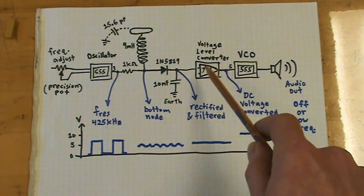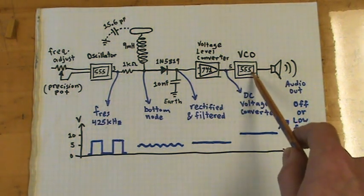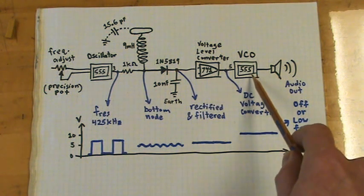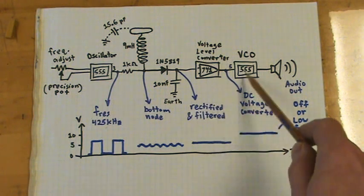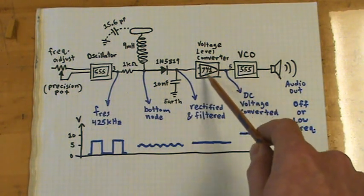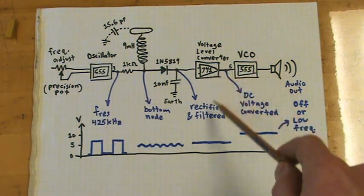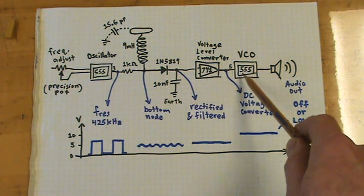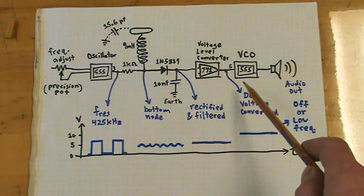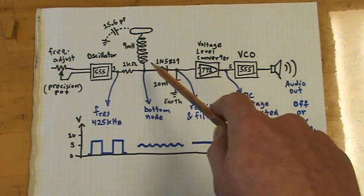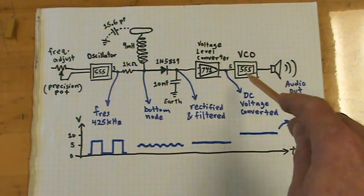Then I've got my voltage controlled oscillator, just another 555 circuit that I would like to feed this into, but I need to do some voltage conversion with the 741 circuit to convert this into something that this one could better understand. If I didn't do that, then as my hand gets closer to the coil, the frequency would go down instead of up, and I wanted it to be more like a theremin where the frequency goes up.